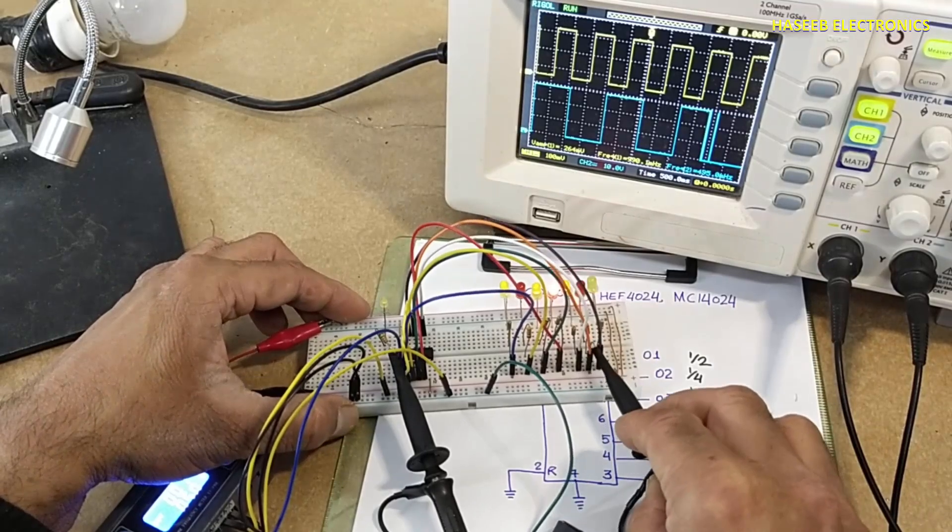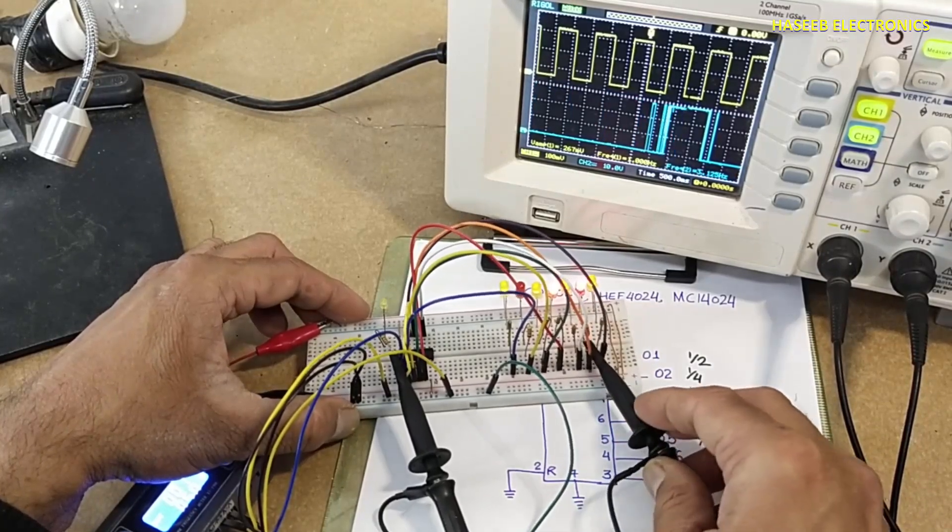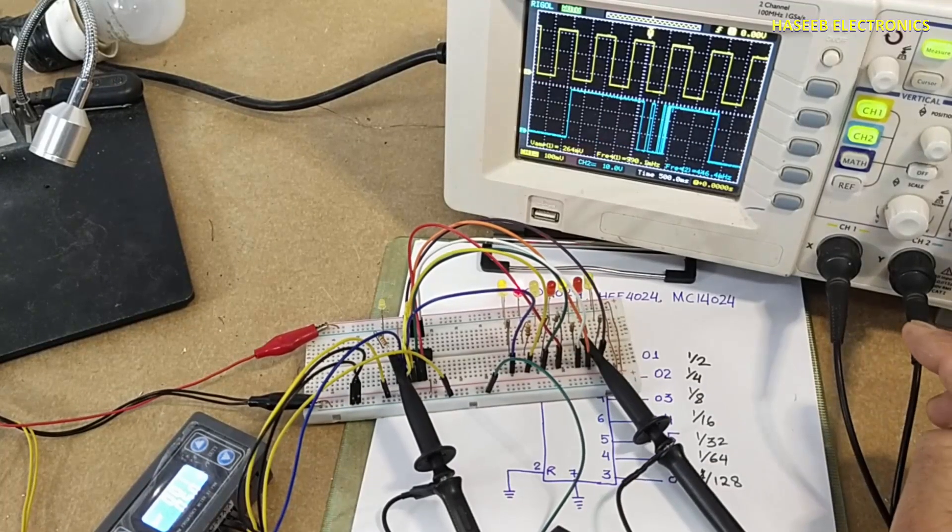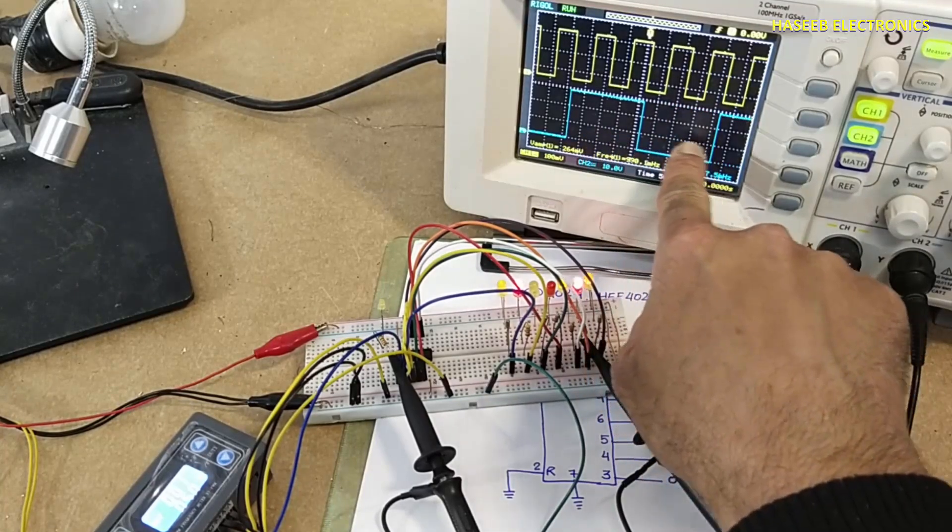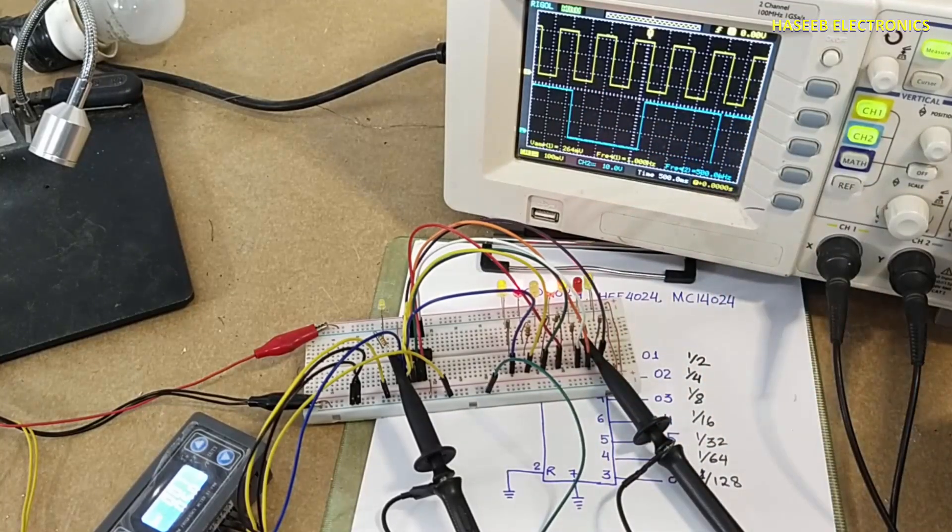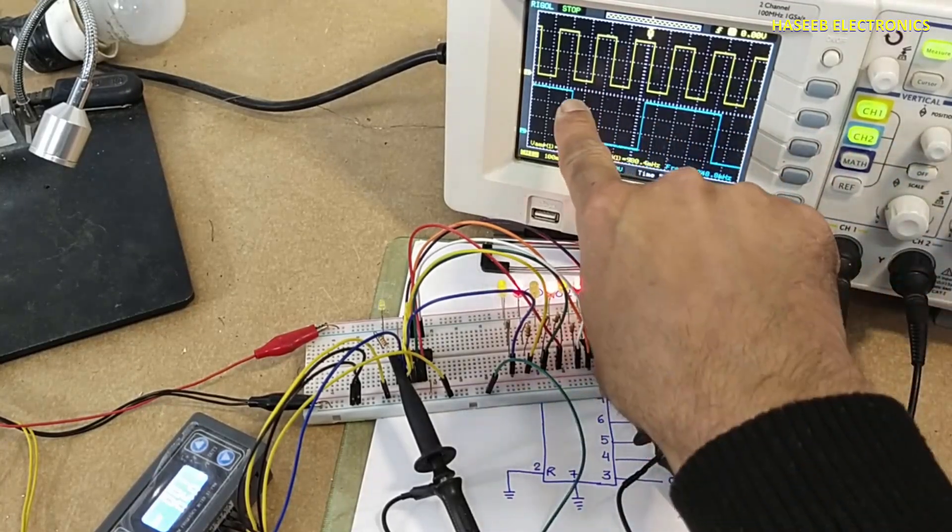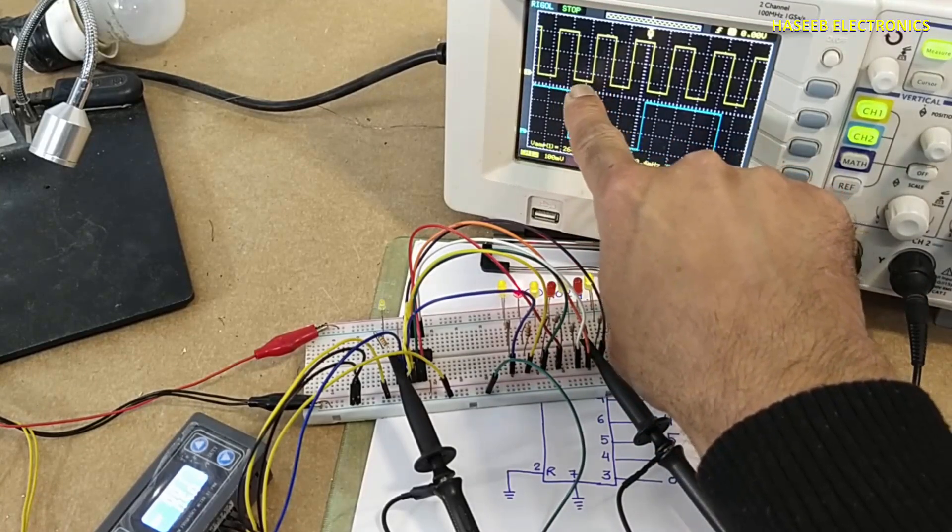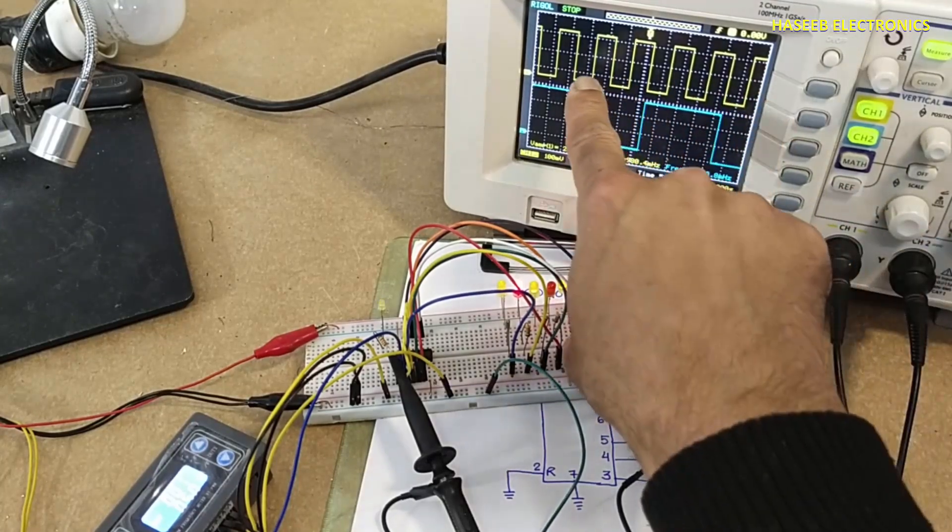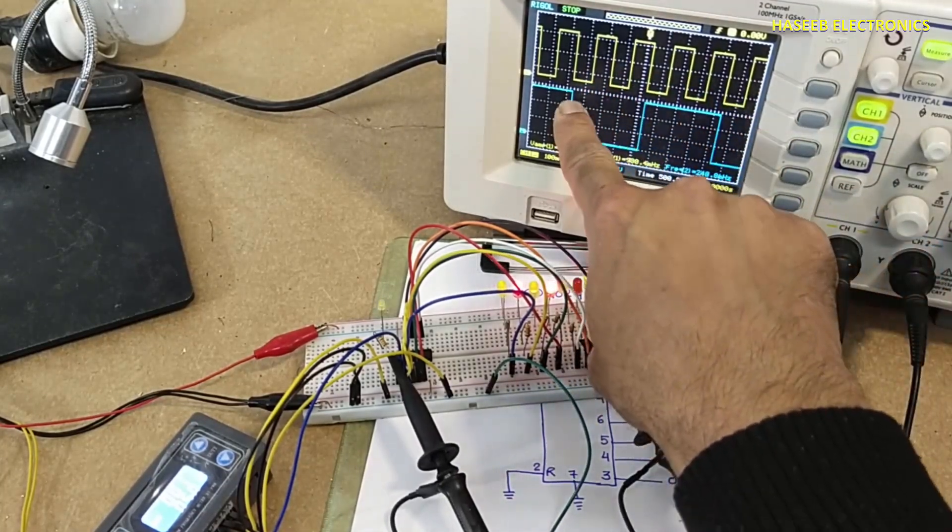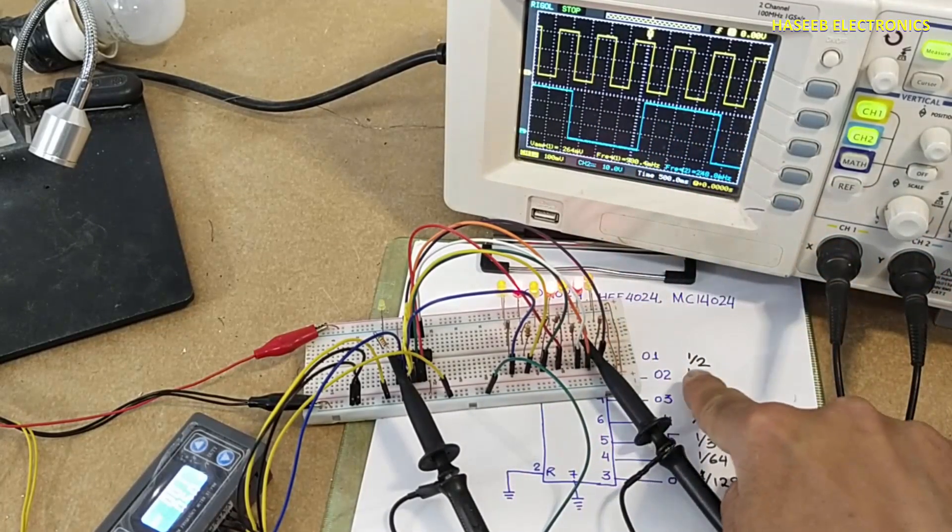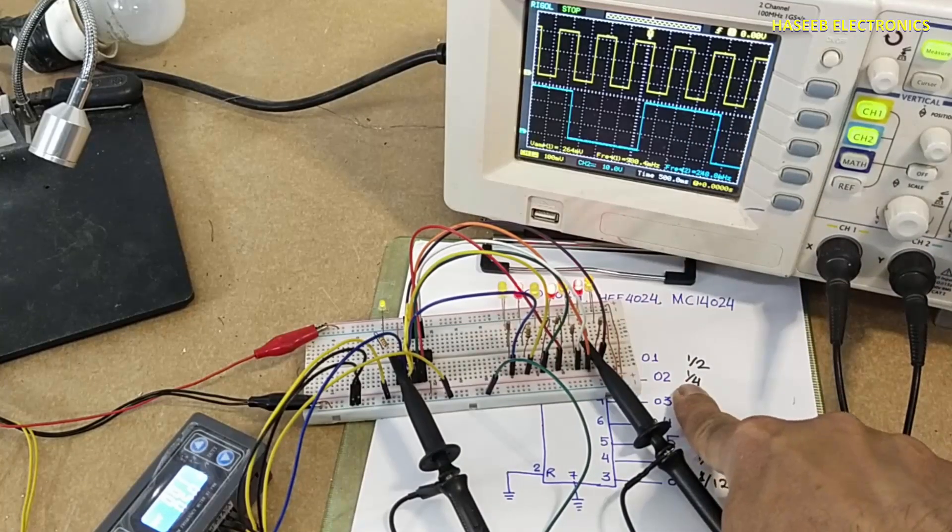Now we will check frequency at output number 2. After each 4 cycles, from here until here, from this falling edge - 1 cycle, 2 cycle, 3 and 4. We need 4 cycles to complete 1 cycle in the output. So output frequency is divided by 4 at output number 2.